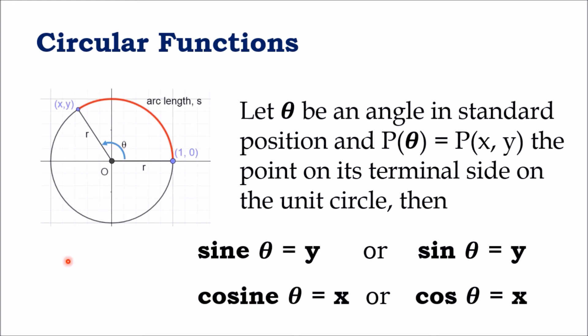Or, the coordinate Y is equal to sine theta, and the coordinate X is equal to cosine theta. Sine theta can be written in this form, and cosine theta can be written in this form. So, these two circular functions are defined through the point on the terminal side of theta on the unit circle.